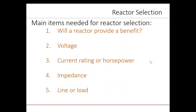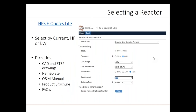We've been through all the benefits of line and load reactors, and all the considerations to do with voltage, current, impedance, and line or load side. Now let's look at how we can put all this together and apply this knowledge in selecting a reactor. eQuotes Lite is an online configuration tool on the HPS website at americas.hammondpowersolutions.com. By clicking the drop-down menu for resources towards the right side of the page, you can find the product configurator. Then you simply fill in the frequency, voltage, horsepower, kilowatts, or current, and select the impedance. The system will then size the best reactor for your application.